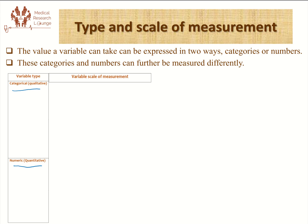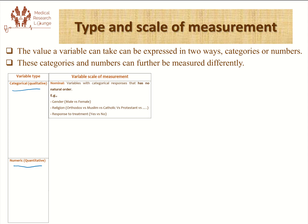In a categorical variable — that means a variable which assumes responses in categories, not in numbers — when we have responses which can only be measured using categories, we can have two different scales of measurement. The first is when these categories do not have any natural order, meaning no rank. We call them nominal variables. For example, in gender, male and female do not have any natural sequence — male doesn't come before female or female is not better than male.